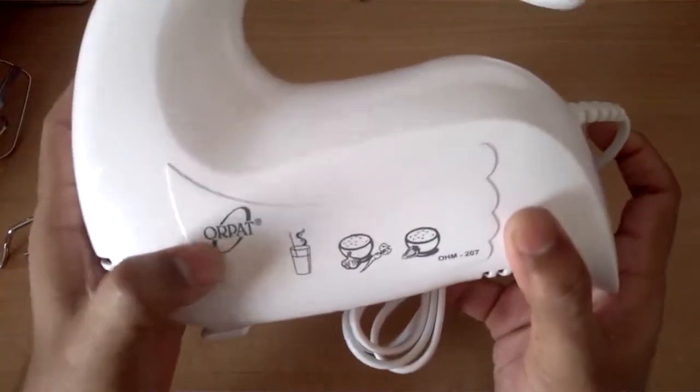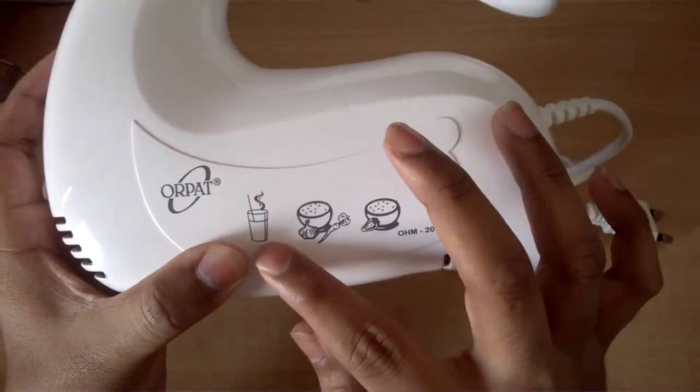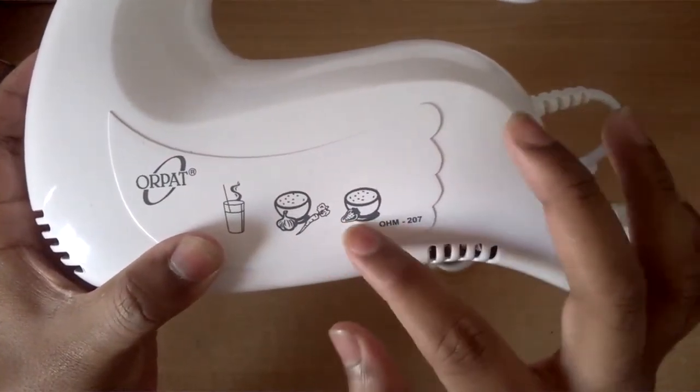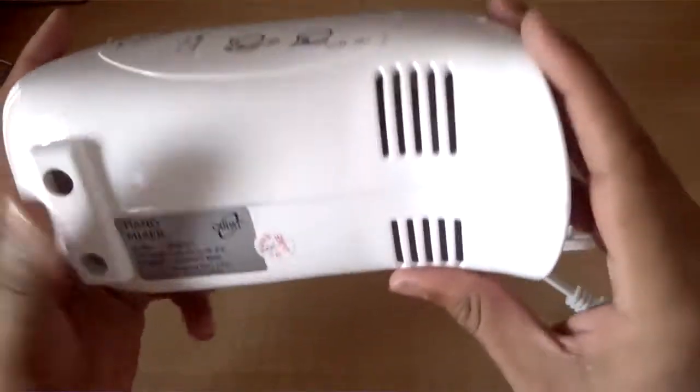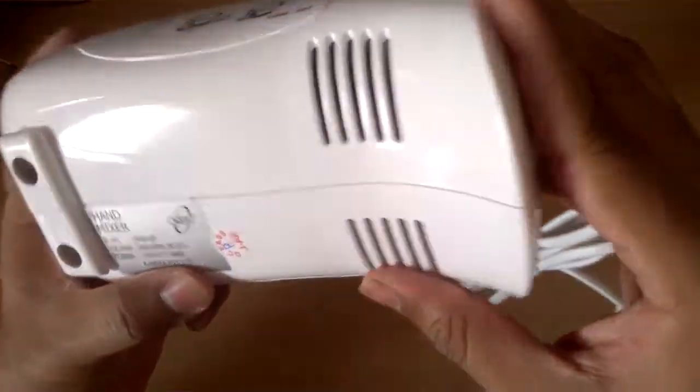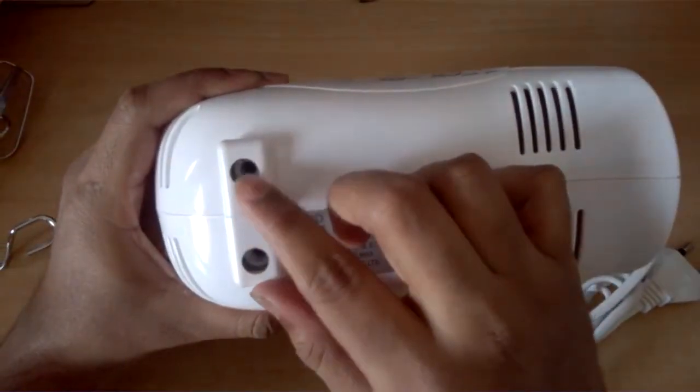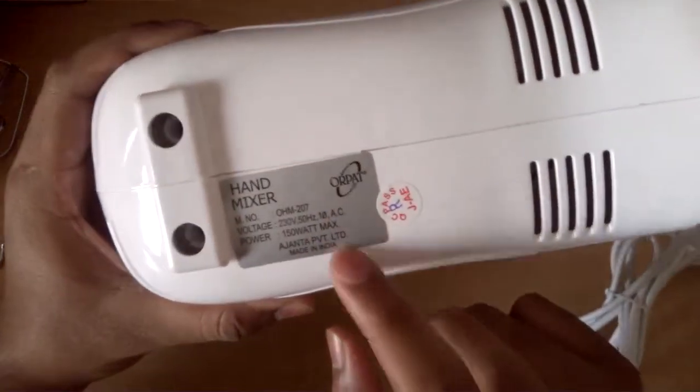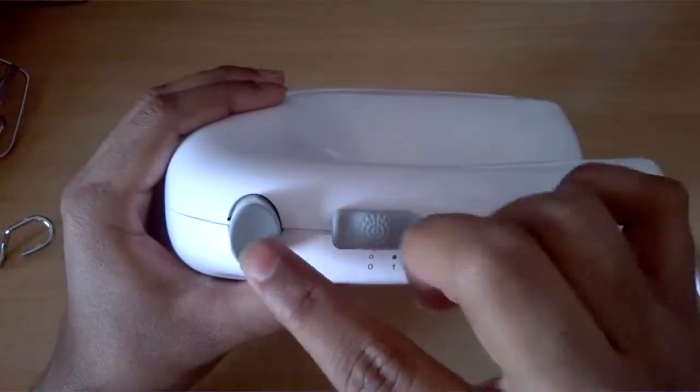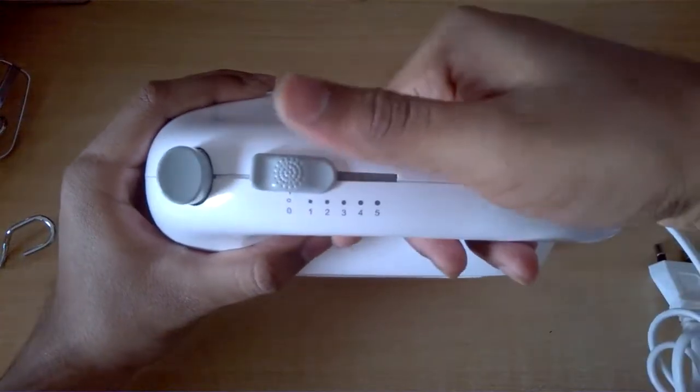What are the things here? You have the Orpat branding, it says you can mix, make some juice and some other stuff maybe for soup. Model number here, you have air vents here as well. These are the two places where you need to place those beaters. Some technical specifications and at the top you have this button to remove those beaters once you put them inside.